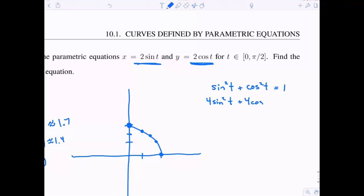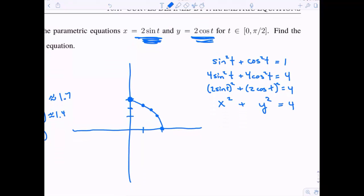And now if I multiply through by 4 on both sides, we can see that really this is just 2 sine of t quantity squared plus 2 cosine of t quantity squared equals 4. Now 2 sine t is the same thing as x. So I go ahead and substitute an x. And 2 cosine t is the same thing as y.